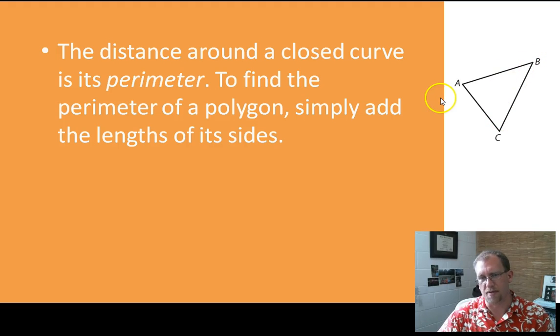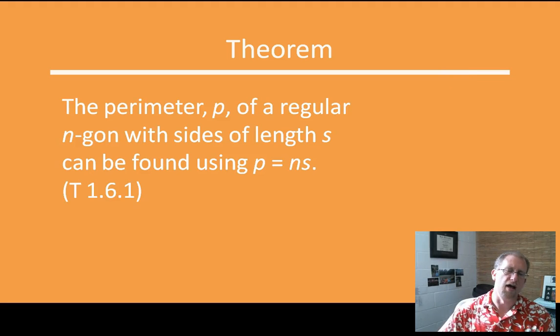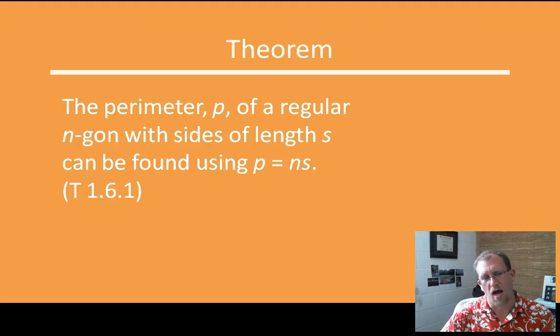So AC plus CB plus BA would give you the perimeter of that triangle. For curvy things, it's a little bit more complicated, but for polygons, it's pretty simple. Matter of fact, for a regular polygon where all the sides are the same length, you can just count the number of sides, measure one side, and multiply. It's pretty simple. The perimeter, P, of a regular n-gon with sides of length S can be found using the formula P equals nS. So the perimeter equals the number of sides times the side length. Pretty simple. It makes sense. So a triangle that has lengths of 5 centimeters would be 5 times 3 or 15 centimeters in the perimeter.